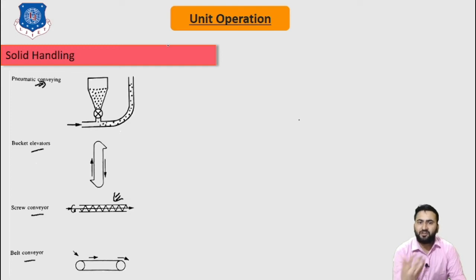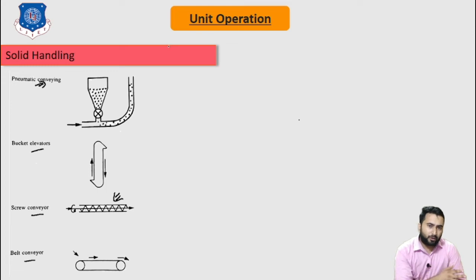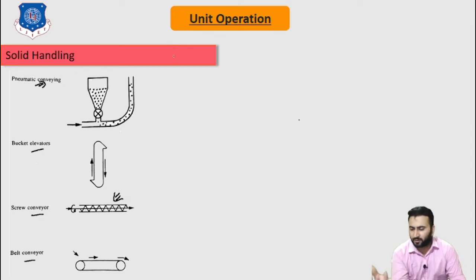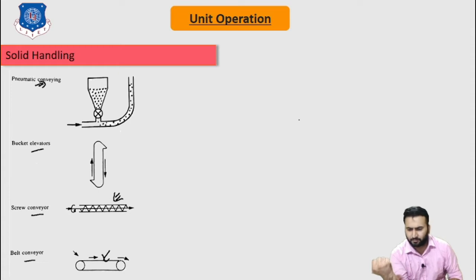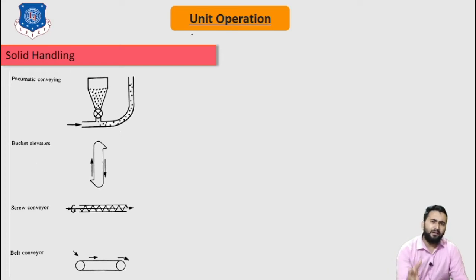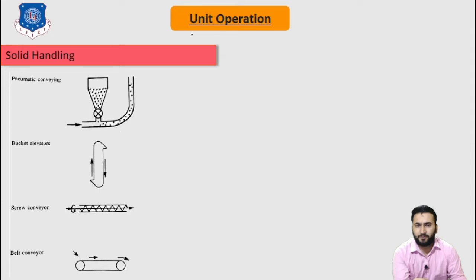The belt conveyor can be used to handle large volumes over long distances economically and cost-effectively. It is mostly used near the horizontal. The belting may be made of fabric or rubber material, and it is mostly used for handling large volumes of solid particles and transferring them over horizontal distances.